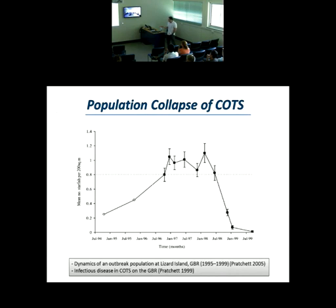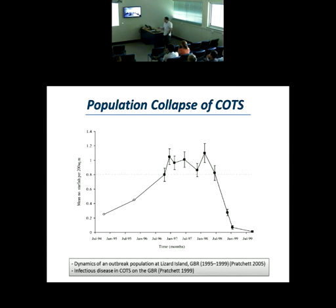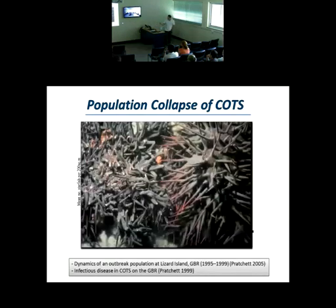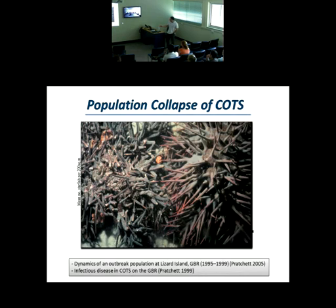This is a study carried out in 2009, from 1995 to 1999. You can see a steep decline in the population number of Crown of Thorns starfish in a six-month period. He also found a sick Crown of Thorns at the same spot, cut the starfish in four, and exposed those pieces to normal healthy Crown of Thorns — and they got sick and died.